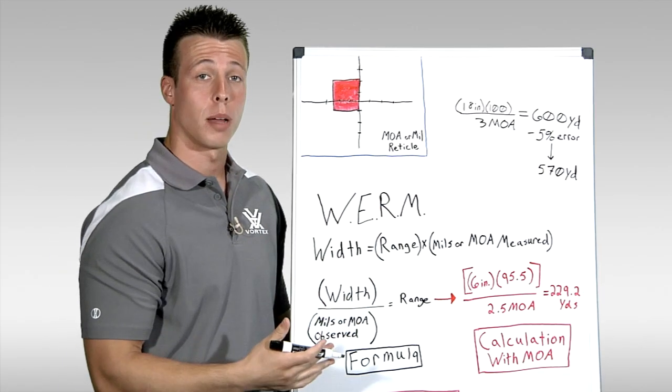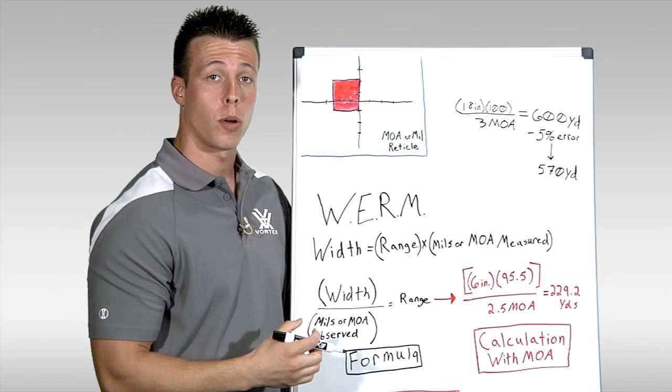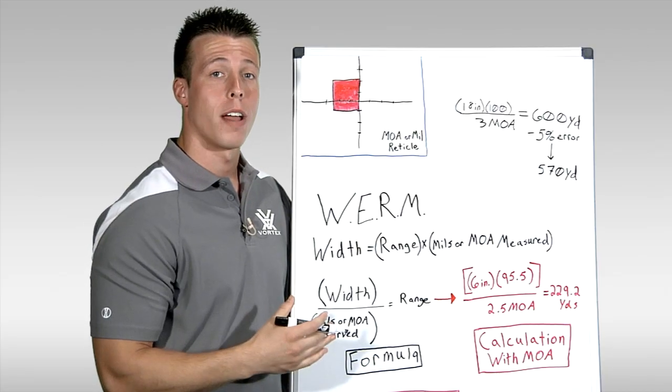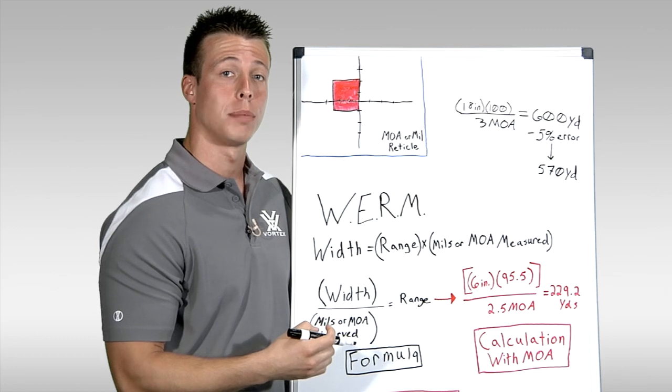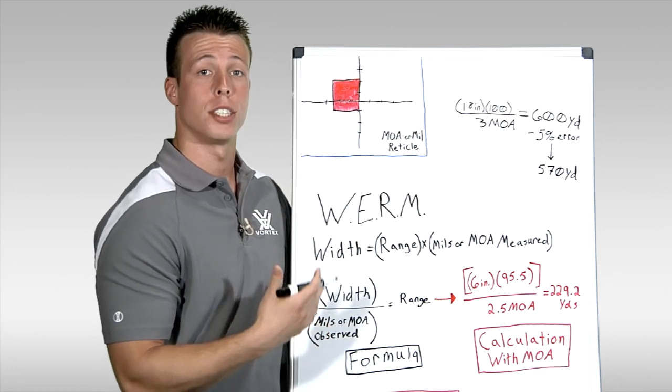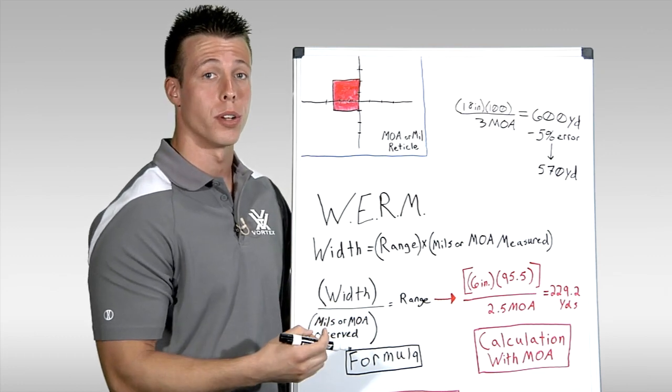Now, be careful of those subtensions. If you're using a second focal plane riflescope, you will need to have the riflescope set to the proper magnification setting in order to ensure that your subtensions are correct. If the subtensions are not correct, this will skew your range estimation.